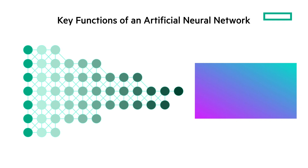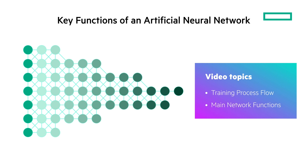The goal of an artificial neural network is to arrive at a conclusion with the least amount of error as quickly as possible. This video covers the complete training process flow of a deep feedforward network, describes the key functions of an ANN, and explains how they work together to optimize a machine learning model.